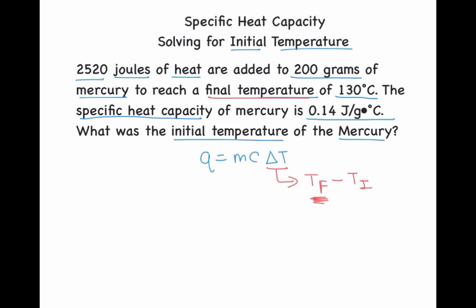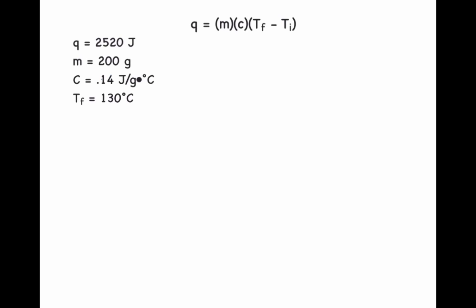Let's see what this would look like. So here's our formula again, where Q represents heat, M represents mass, C represents specific heat capacity, and then we have temperature final minus temperature initial, which represents my delta T.